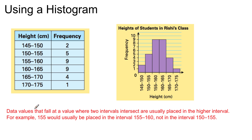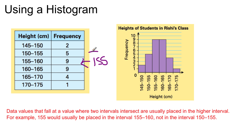Data values that fall at the value where two intervals intersect are usually placed in the higher interval. So if a kid is 155 centimeters, they will be placed here in the higher of the two intervals. So again, 155 would be placed in the higher interval at 155. Write that down.